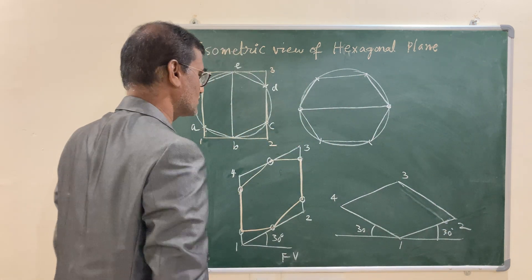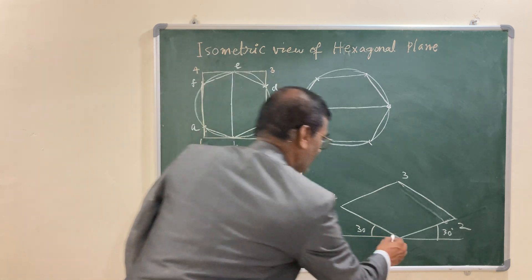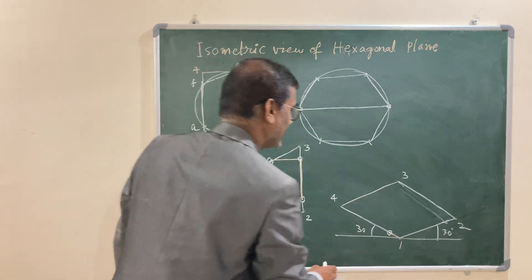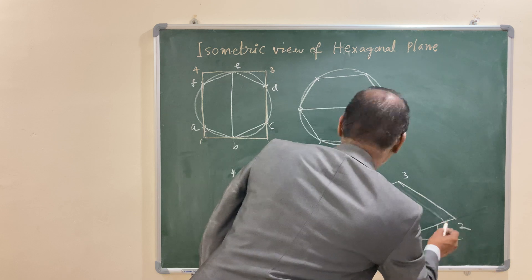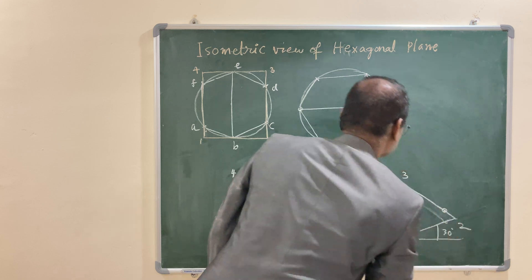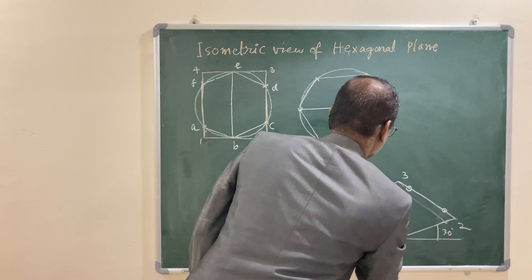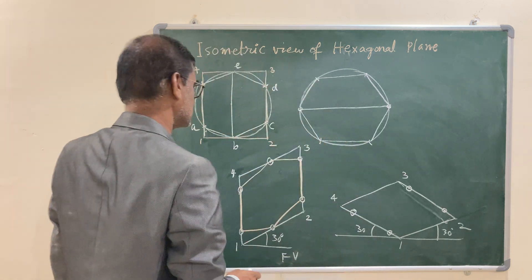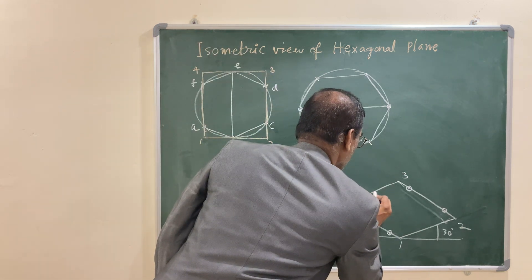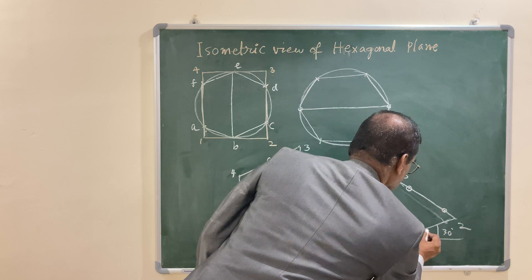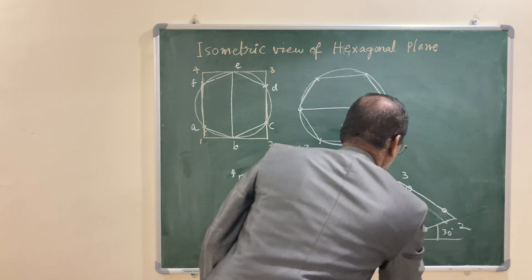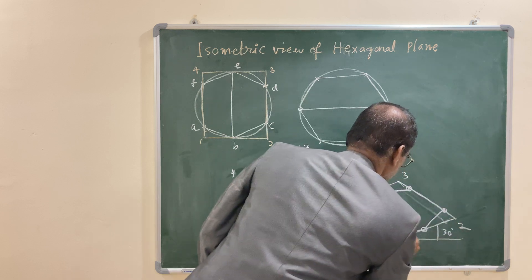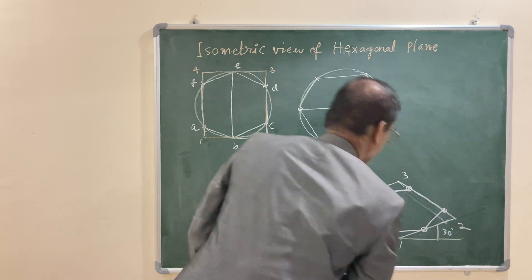So, with the same radius, you can just locate from 1, the required point that is your A and from 2, locate this point and from 3 and from 4, locate this point. After locating this, these are the two midpoints you can locate and join in proper sequence. You are going to get the required isometric view of the hexagonal plane.